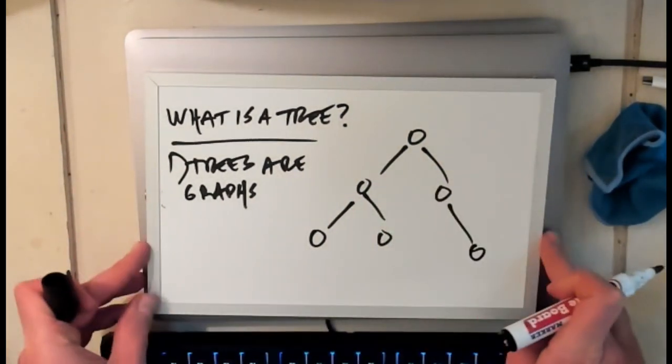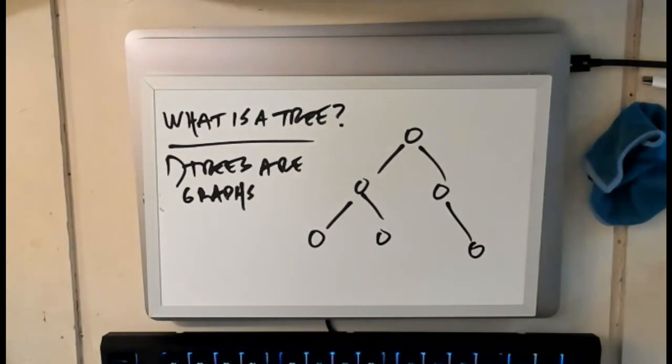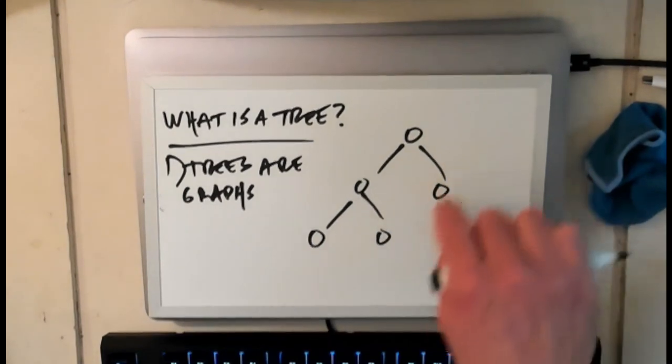If I move the nodes around, you maybe see it better. Maybe you're just so used to seeing binary trees this way, you're like, well, that's a tree, but it's also a graph, right? These are nodes connected by edges.